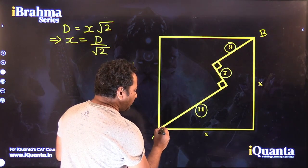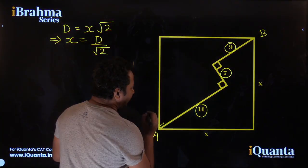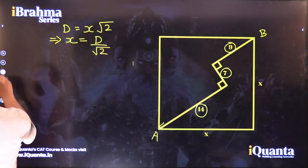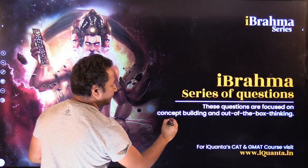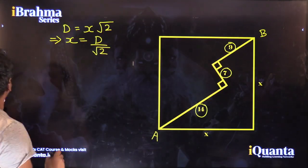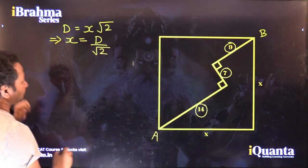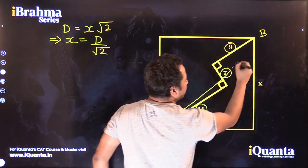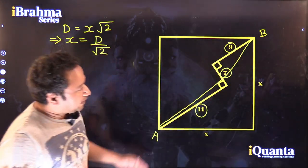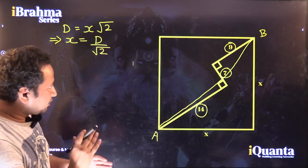What if I want to actually create the diagonal? Let us do that. I want to create the diagonal. So I have joined AB and this is basically the diagonal.